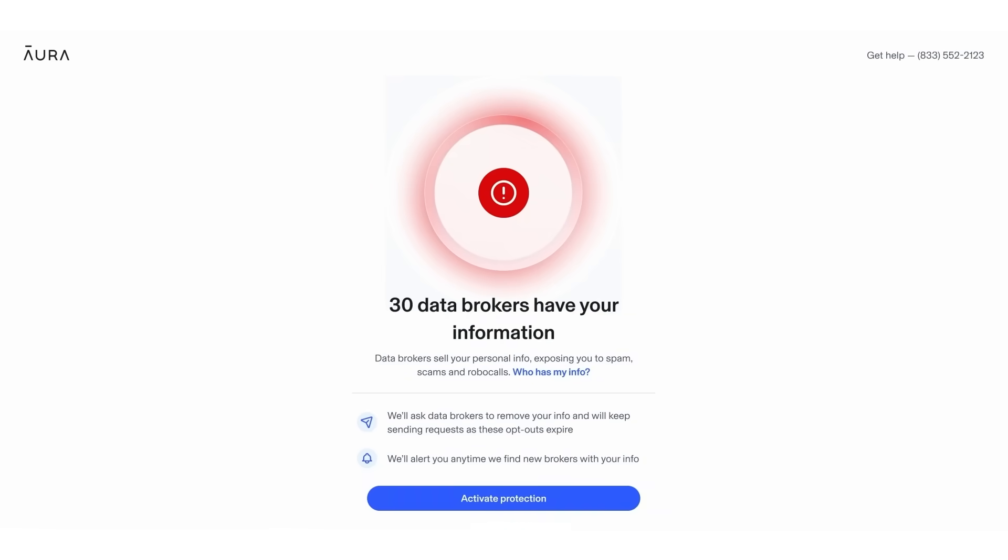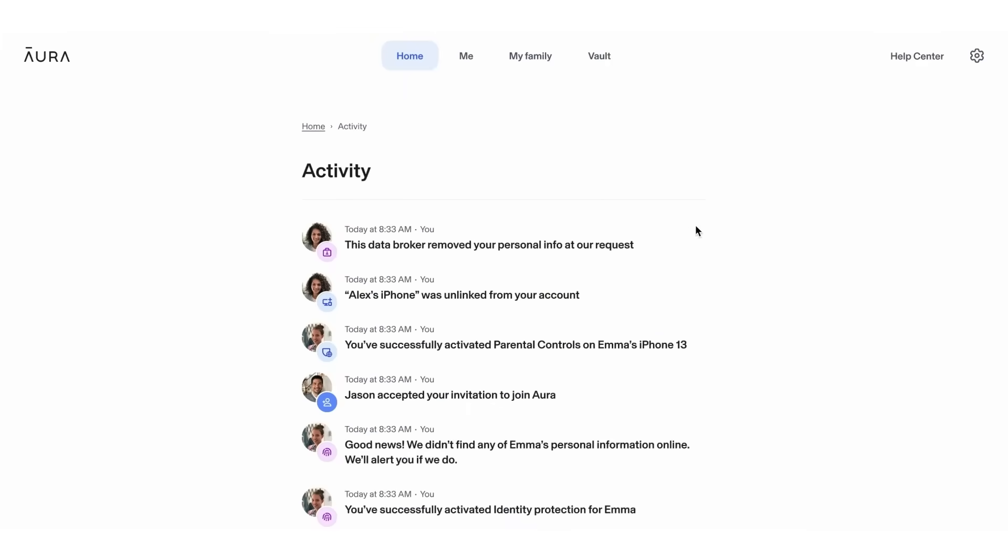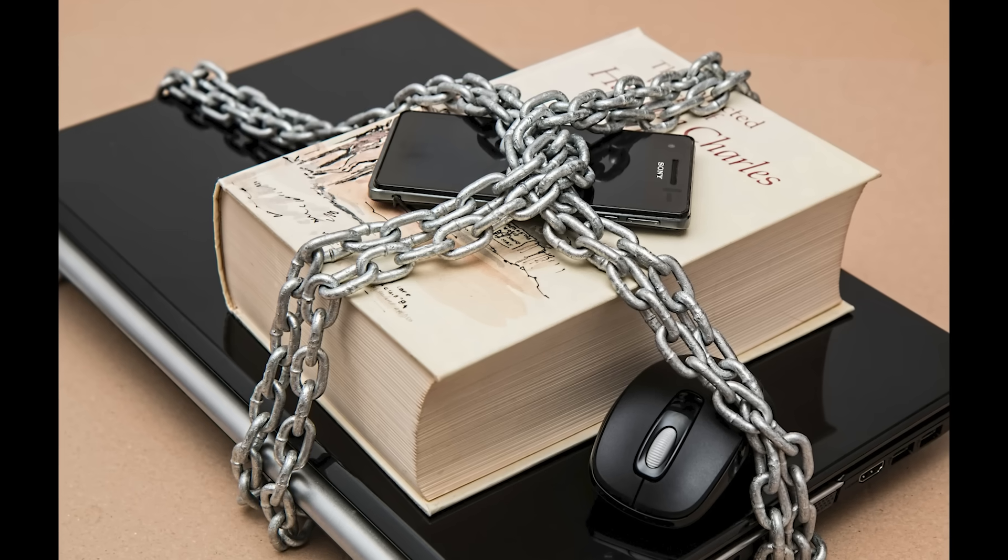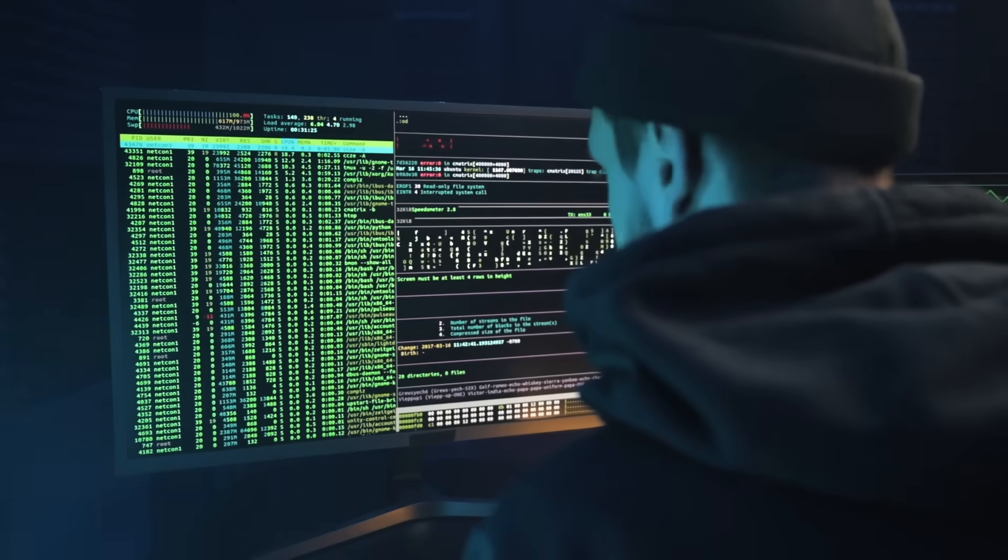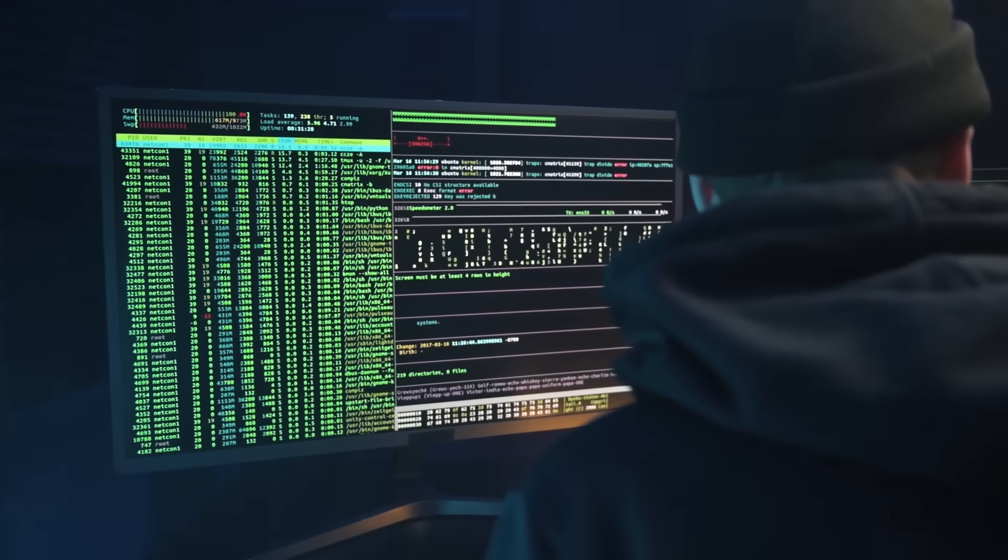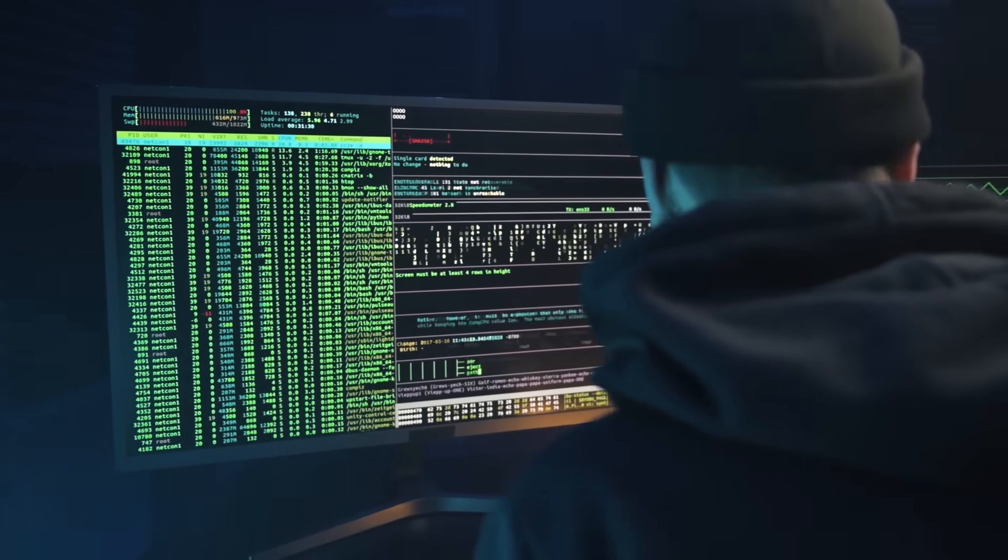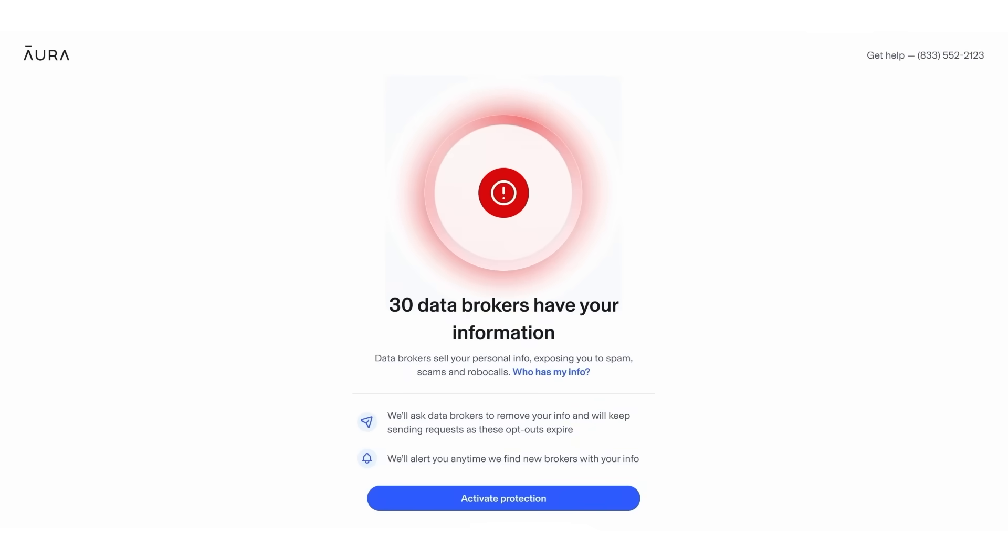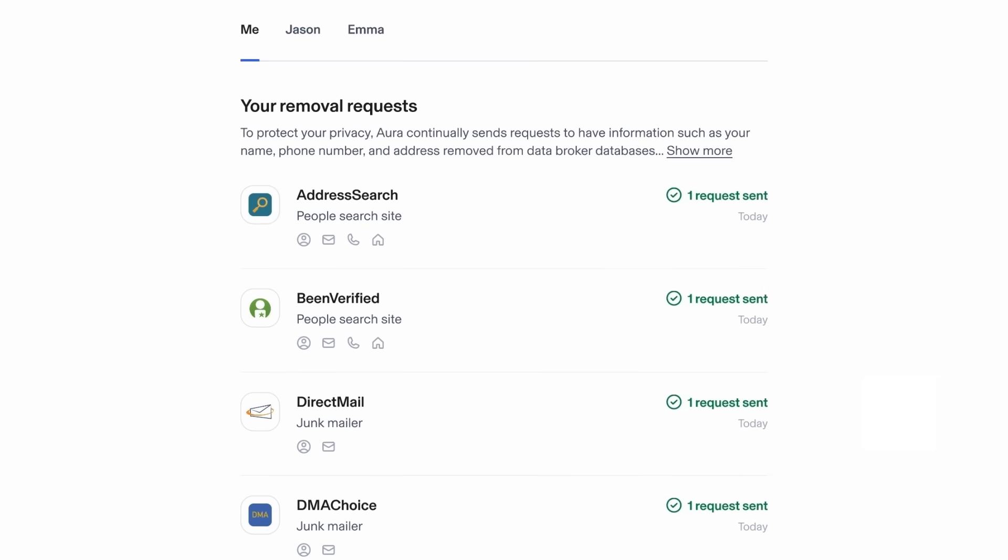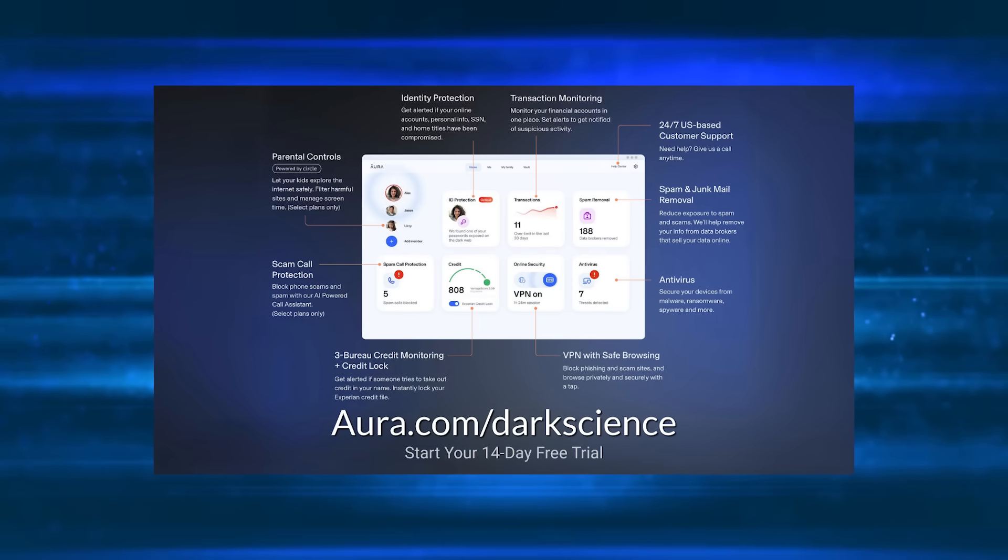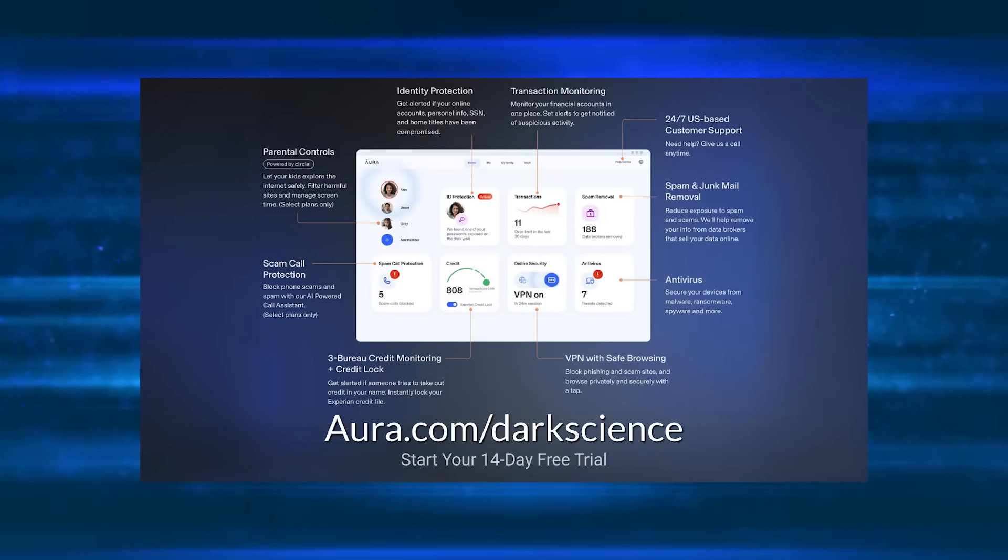Aura alerts you to data brokers who are selling your sensitive information and stops them in the act. It also clears your spam folder and alerts you to suspicious activity. Don't take your data security for granted. I discovered the password I had been using for the last year was on the dark web. Fortunately, I was alerted and changed it before I became a victim. Don't let this happen to you. Aura protects your information with strong passwords, monitors your activity, and freezes credit cards in the event your data is compromised. If you value the safety of your data and want peace of mind, get Aura today. Go to Aura.com/darkscience to start a two-week free trial. Thanks to Aura for sponsoring this video.